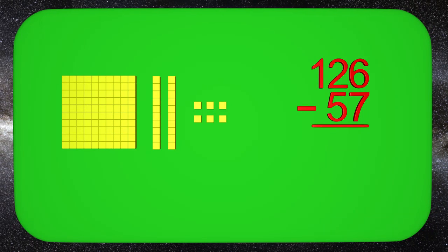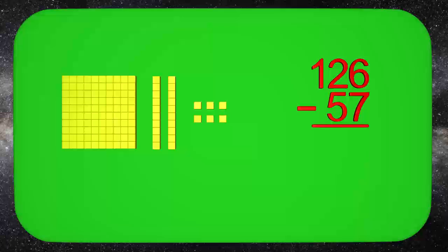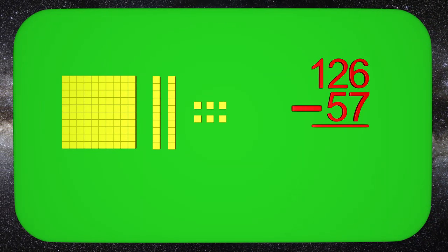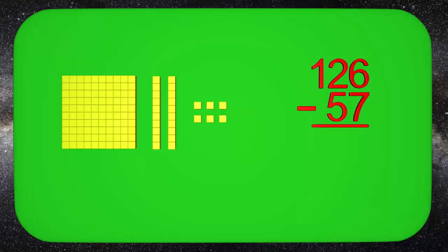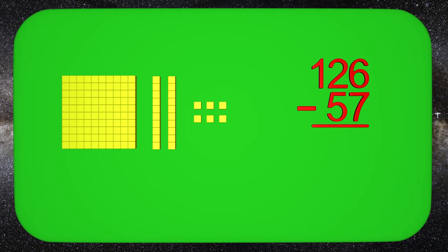Now let's go to the subtraction problem. Here we have the same numbers as before, but this time we are subtracting. We have our blocks set up again with 126 blocks. This time we need to take away 57 blocks. As usual, we start with our ones place. We need to take away 7 blocks.